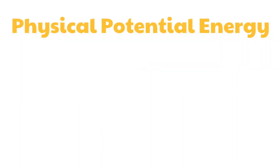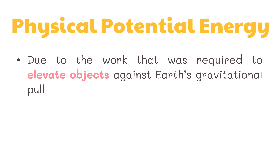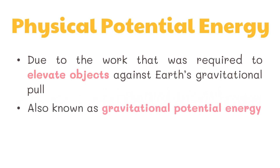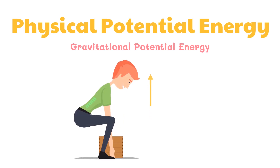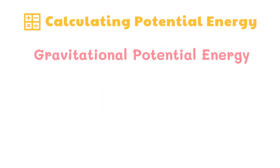Physical potential energy is primarily due to the work required to elevate objects against Earth's gravitational pull. It is also known as gravitational potential energy. When you lift an object, you work against the pull of gravity, and this work gives the object potential energy because of its position or location — it is the energy of position. The total amount of gravitational potential energy is equal to the product of the weight of the object and the height it is at.